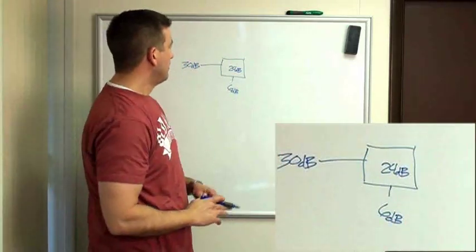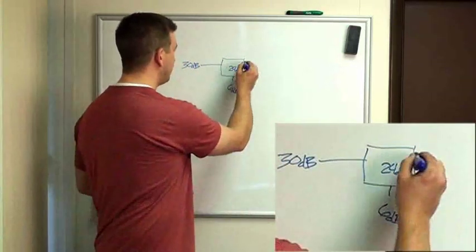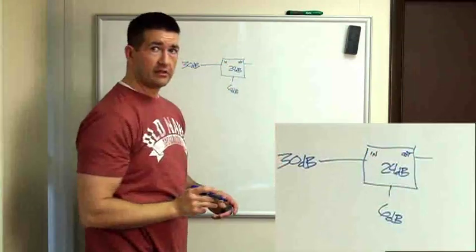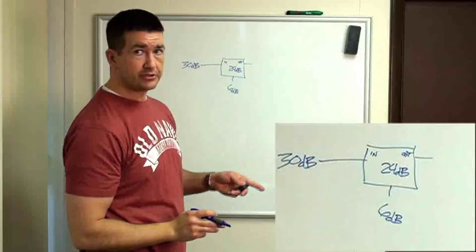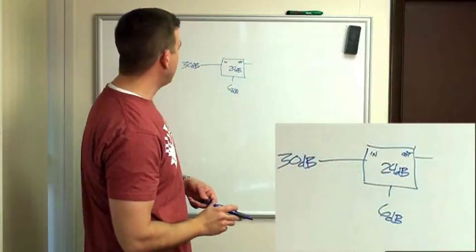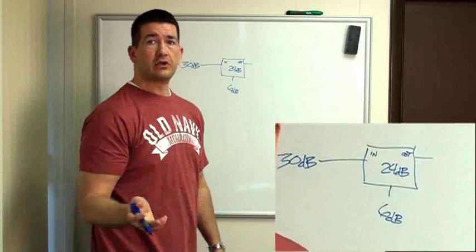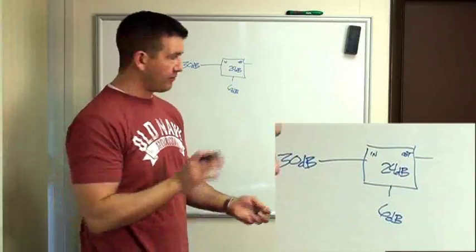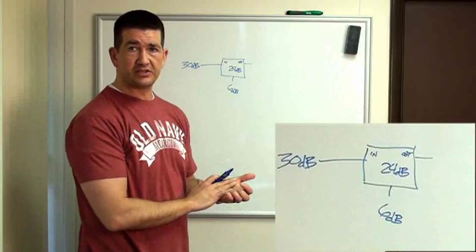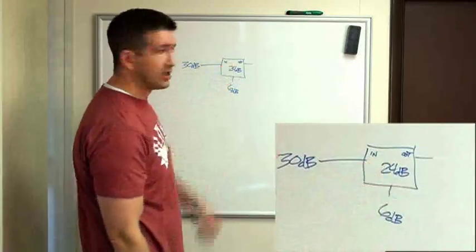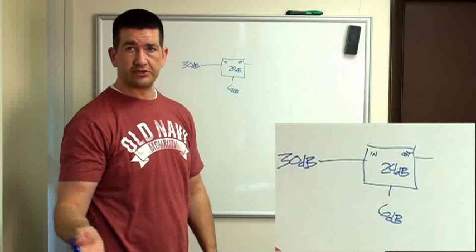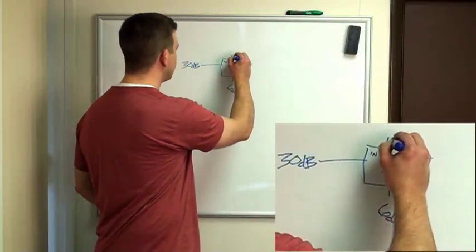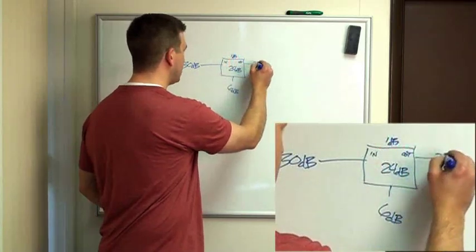So, we have 6 dB on the output. Again, to calculate the loss between the tap itself, the insertion loss on a 24 dB tap is 1 dB. You would have to look at your manufacturer spec sheet when you're designing this. You always want to have the manufacturer specifications there because you're constantly going to be coming across questions as far as what insertion loss is this. So, if this is 1 dB insertion loss on here, we're going to have 29 dB on the output.